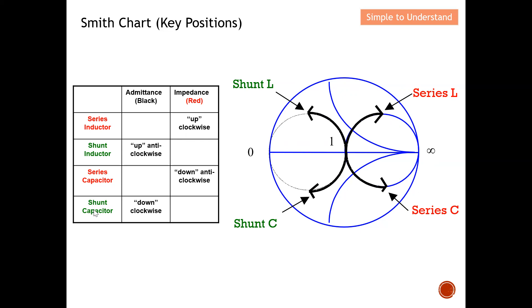For a series capacitor, you use the impedance chart and move downward in a clockwise direction. For a shunt capacitor, you use the admittance chart and move downward in a clockwise direction as well. So the rule is: inductors move up, capacitors move down. Whether it's clockwise or anti-clockwise depends on whether it's in series (use impedance chart) or shunt (use admittance chart). A shunt capacitor moves down clockwise on the admittance chart.